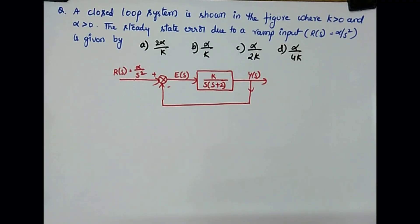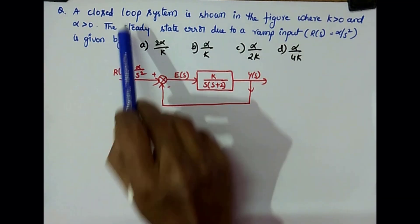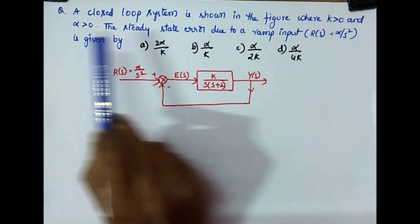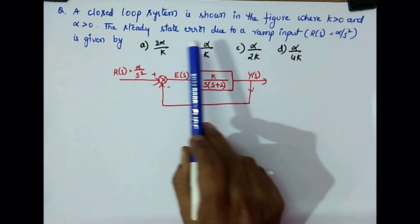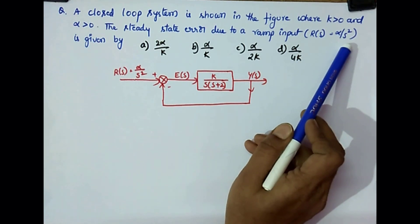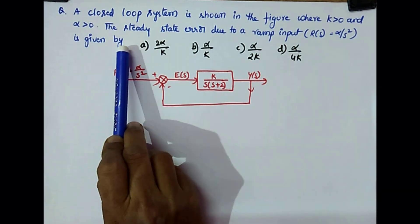Good day all of you. Today's GATE question is about steady-state error. A closed-loop system is shown in the figure where k greater than 0 and alpha greater than 0. The steady-state error due to a ramp input R(s) equals alpha by s squared is given by.